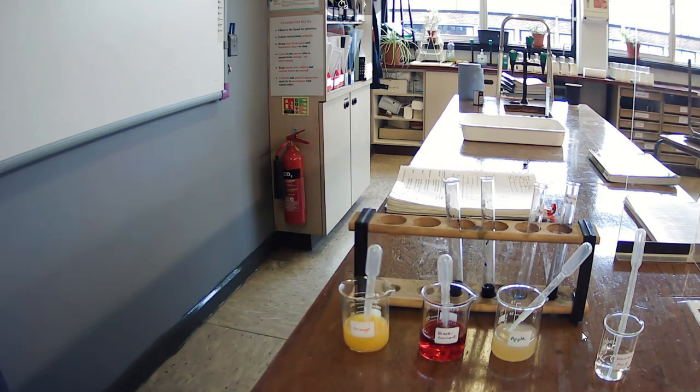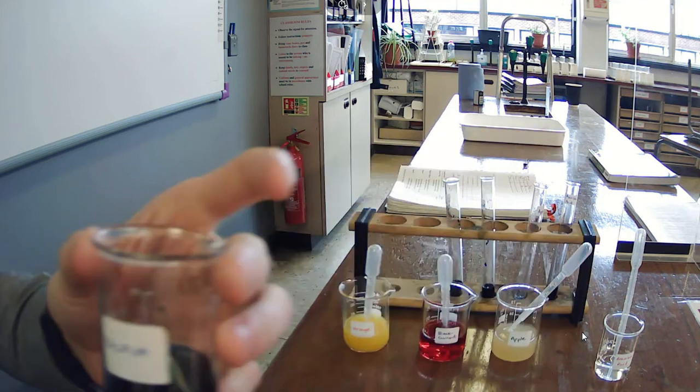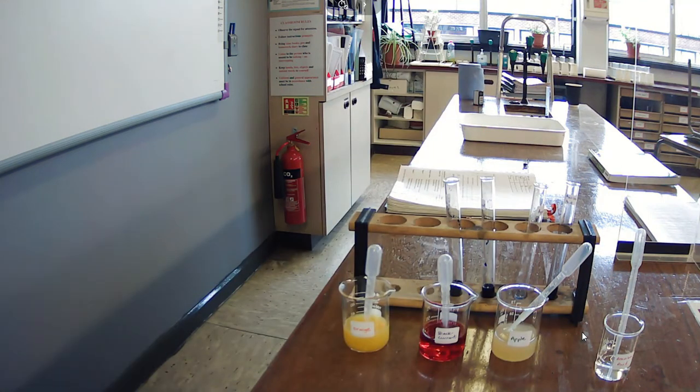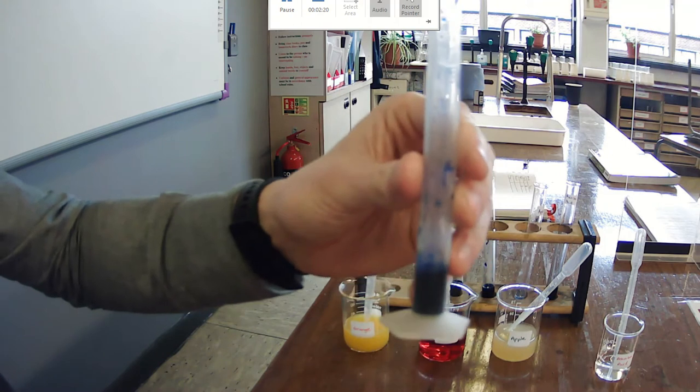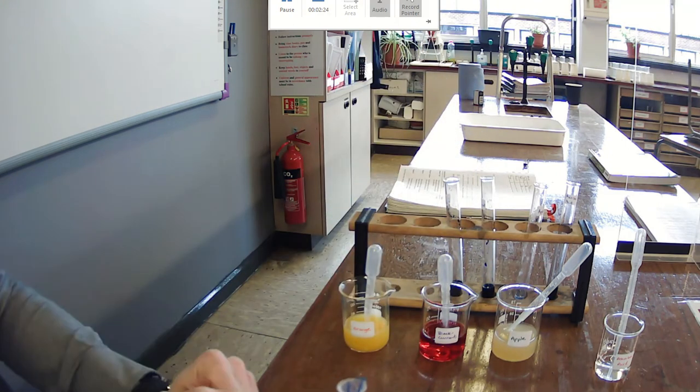Now it probably doesn't do any harm to try and predict which one you think is going to have the most vitamin C. Here we have our blue DCPIP, the dark blue chemical which is used in this test, and already measured out we have two centimeters cubed of DCPIP.